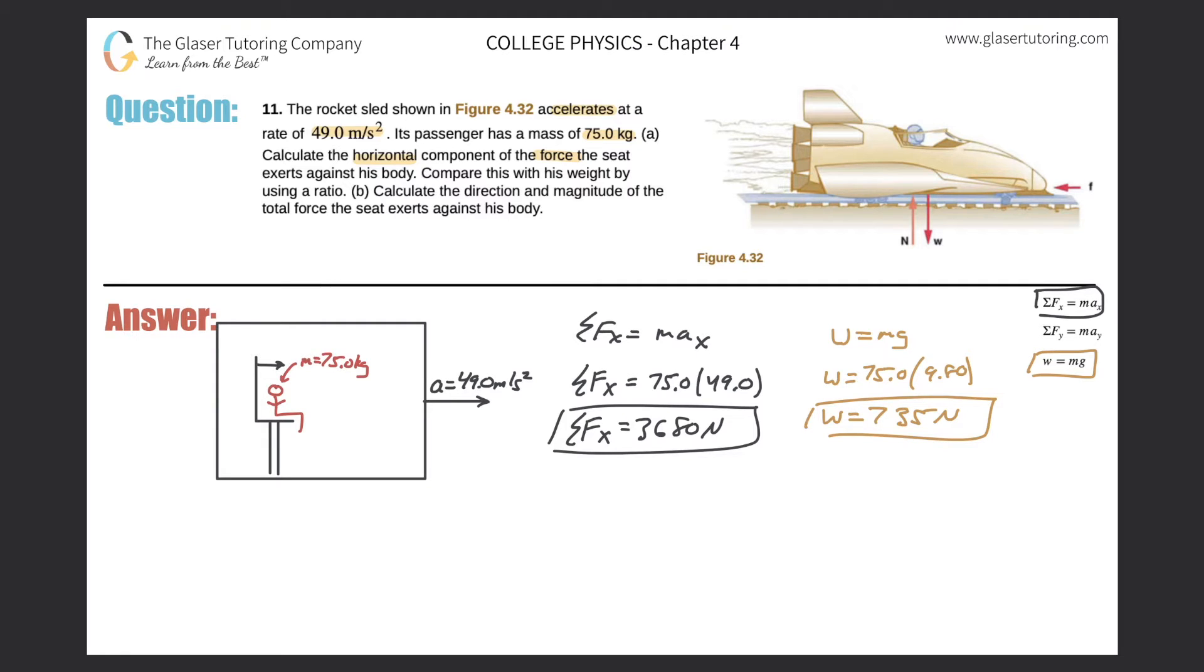So now we just got to compare the two using a ratio. So just take 3680 and divide it by the 735 to find a ratio. So 3680 over 735. And we get exactly 5.8 almost. So this is 5.